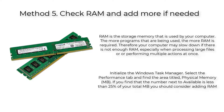Open the Windows Task Manager, select the Performance tab, and find the area titled Physical Memory. If the number next to Available is less than 25 percent of your total MB, you should consider adding more RAM.